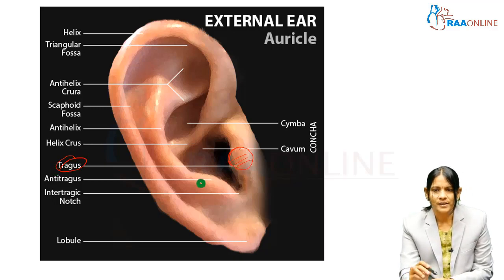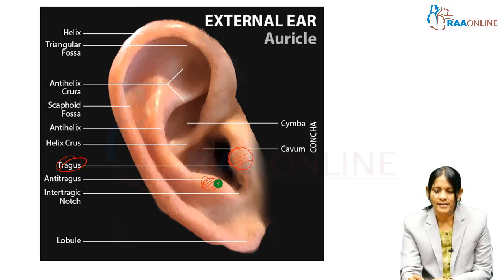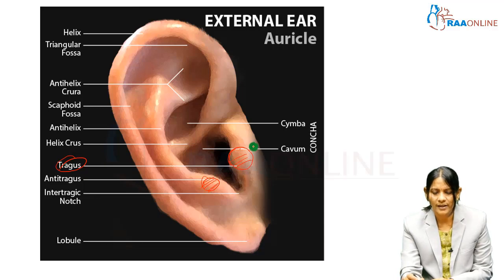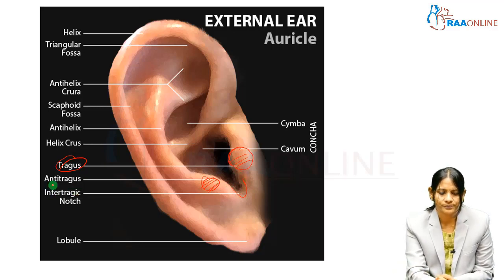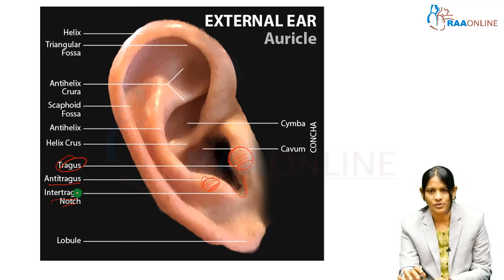Just opposite to the tragus is the antitragus — 'anti' means opposite. In between the two is a deep notch, which is the intertragic notch. So: tragus, antitragus, intertragic notch.